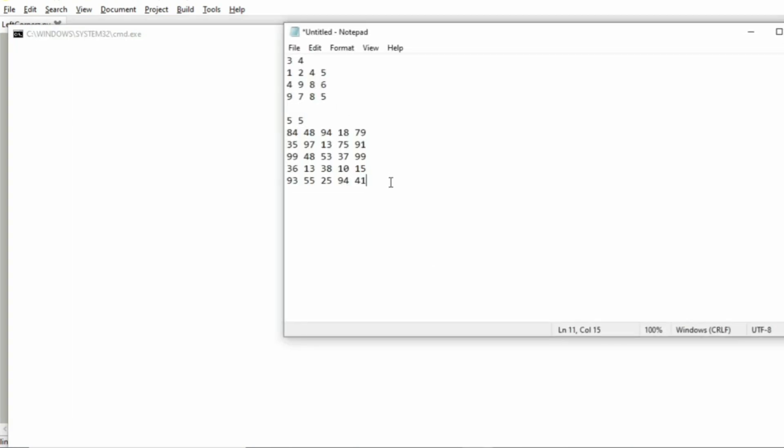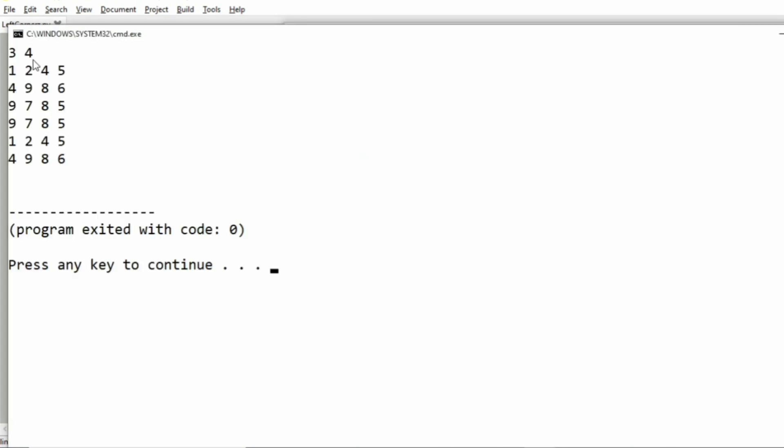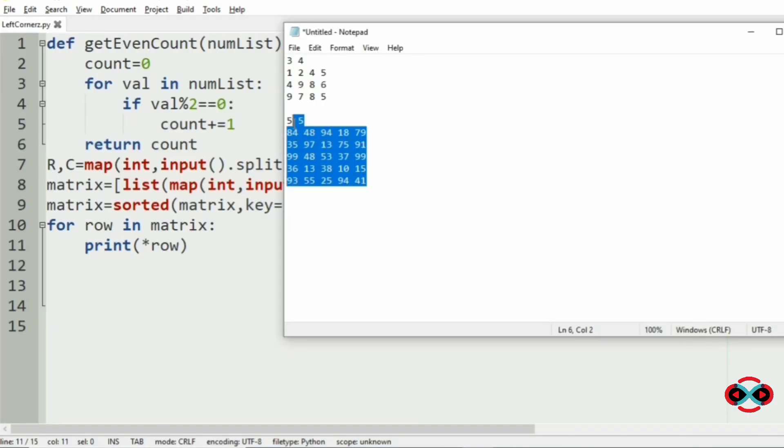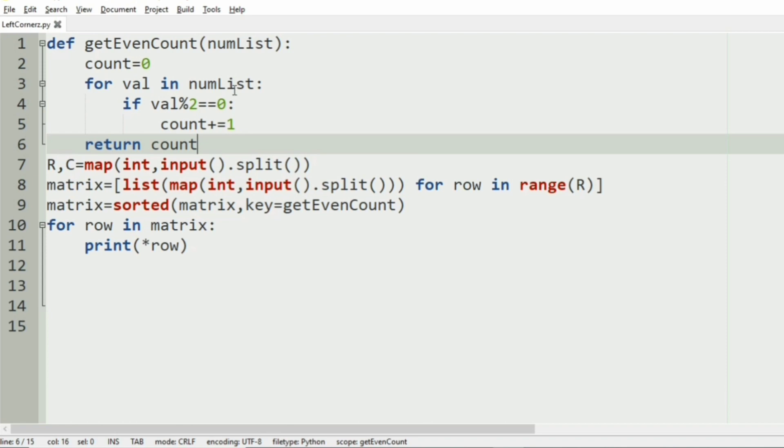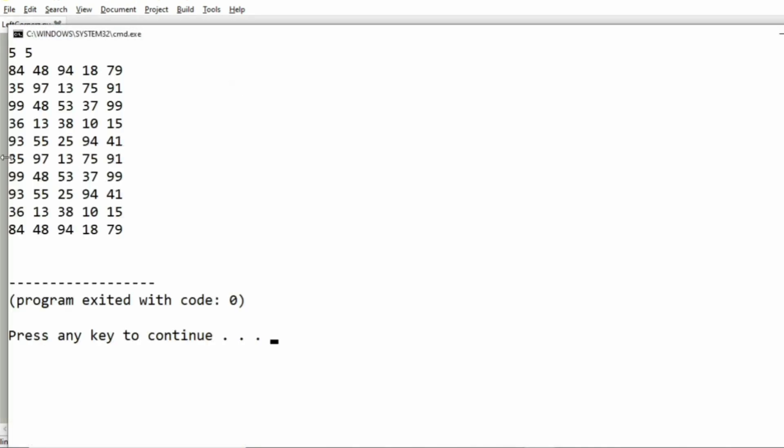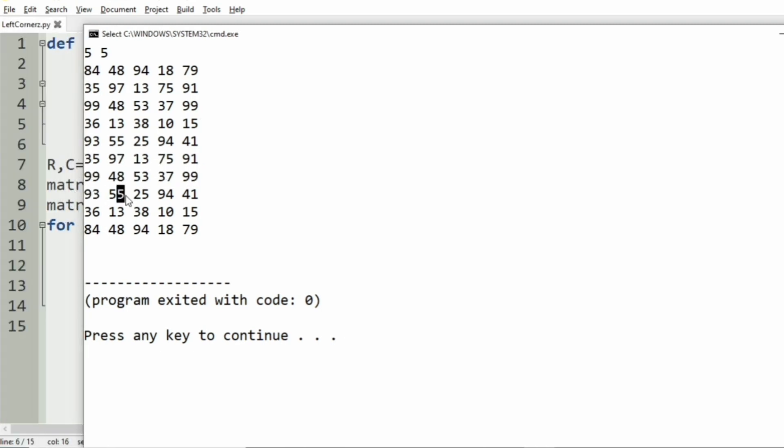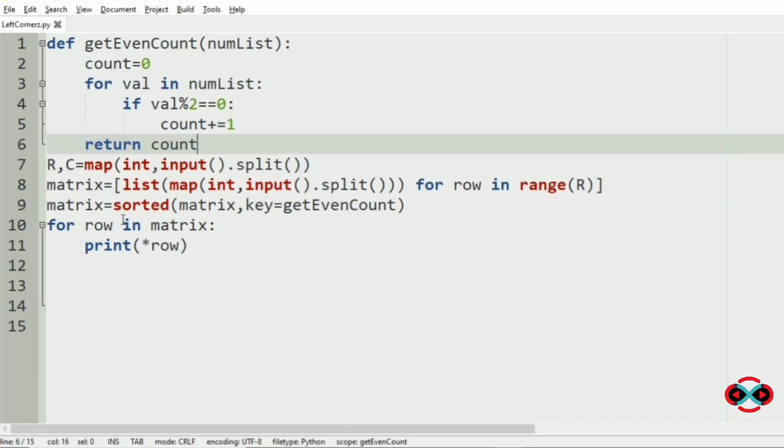Now consider our first test case. Here our output is right as you can see here one even integer, here two even integers and here it is three even integers. So they have been sorted. Then our second test case, here you can see that as we have discussed in the logic video, the output has been sorted based upon the even integers in each row.